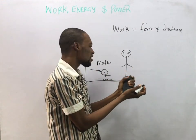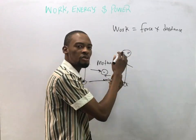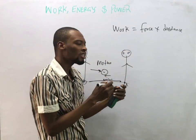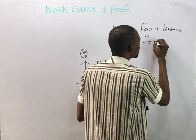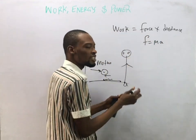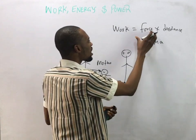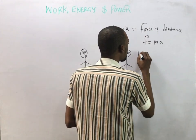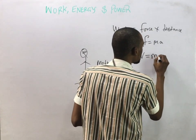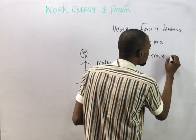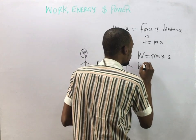If there is force and there is no distance, work done is zero. So if you put this whole building on your head, as long as there is no displacement, that means no work is done. Note that force equals ma, which is mass times acceleration.